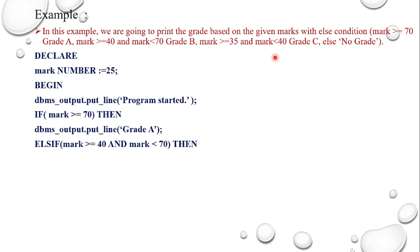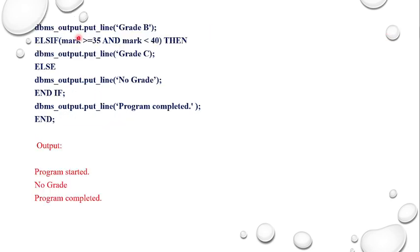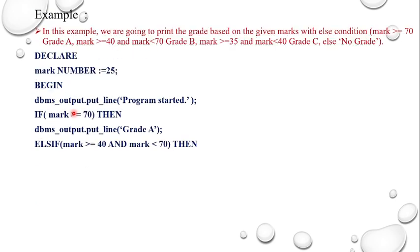The program is written as: DECLARE mark number := 25; BEGIN DBMS_OUTPUT.PUT_LINE('Program started'); IF mark >= 70 THEN print grade A; ELSIF mark >= 40 AND mark < 70 THEN print grade B; ELSIF mark >= 35 AND mark < 40 THEN print grade C; ELSE print 'no grade'; END IF; DBMS_OUTPUT.PUT_LINE('Program completed'); END; — Since the mark is 25, output is 'Program started', 'no grade', 'Program completed'. If you change the mark to 75, it will print grade A.